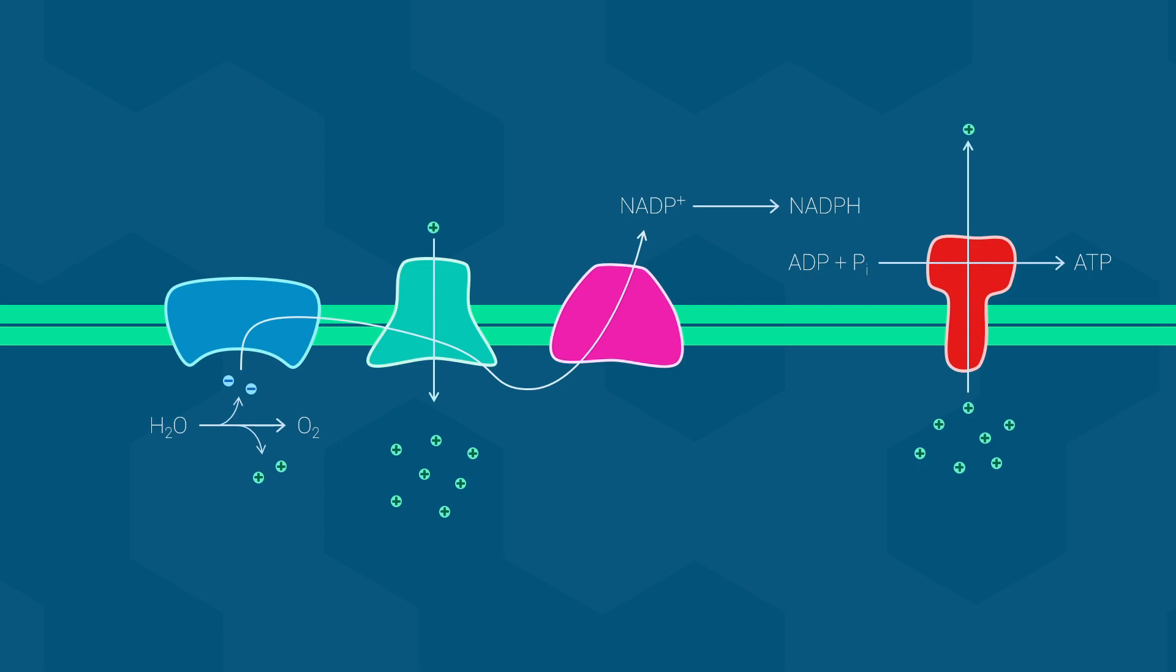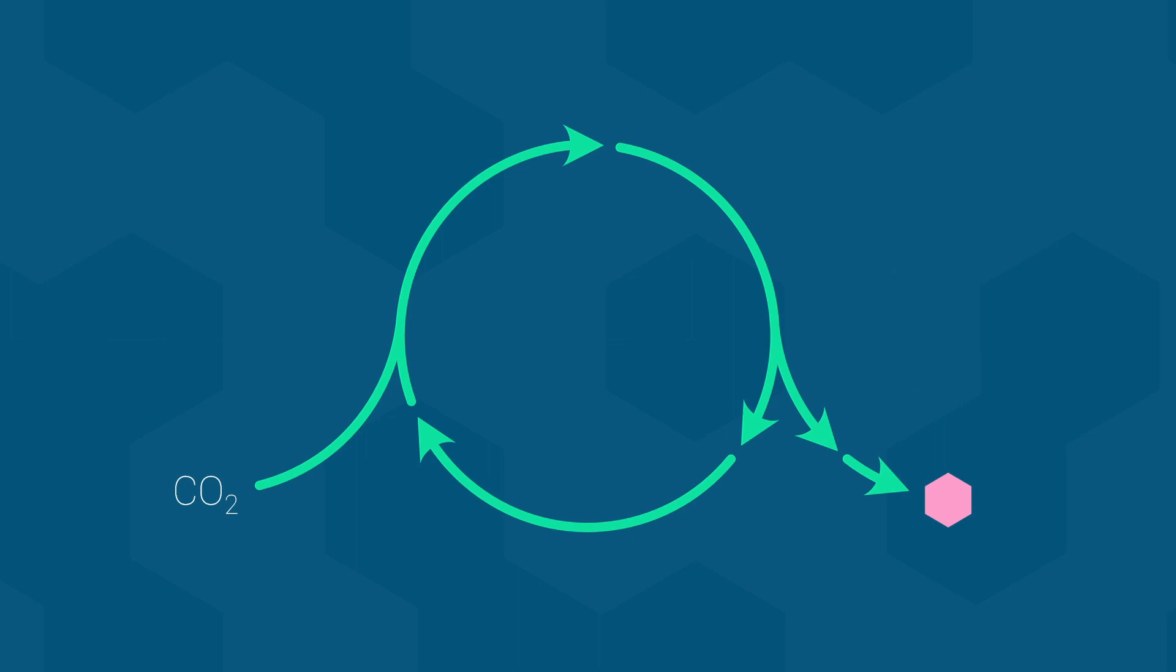So the net result of photophosphorylation is that light energy from the sun is converted into chemical energy in the form of ATP and NADPH. In the final step of photosynthesis, these ATP and NADPH molecules are used during the Calvin cycle to convert carbon dioxide into carbohydrate molecules. ATP provides the energy and NADPH provides the electrons needed to reduce the carbon atoms.